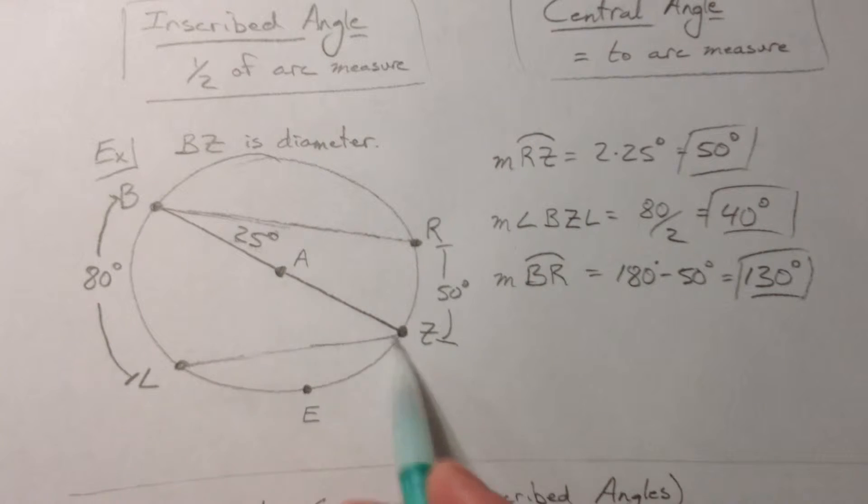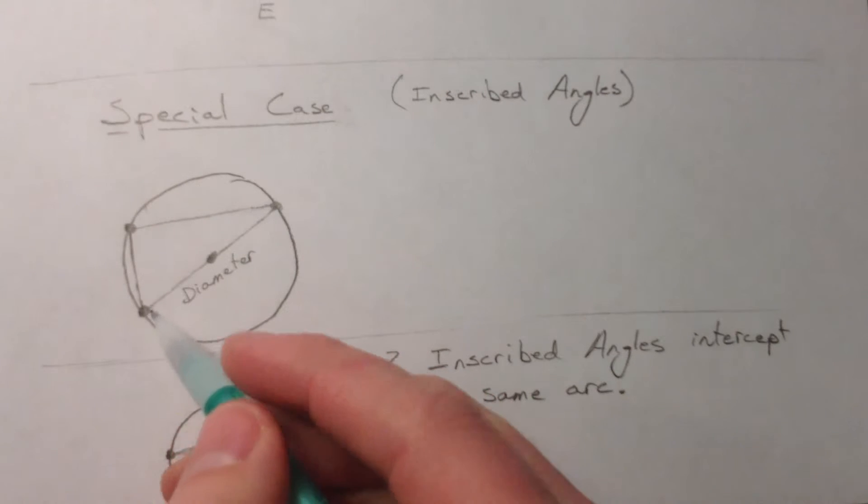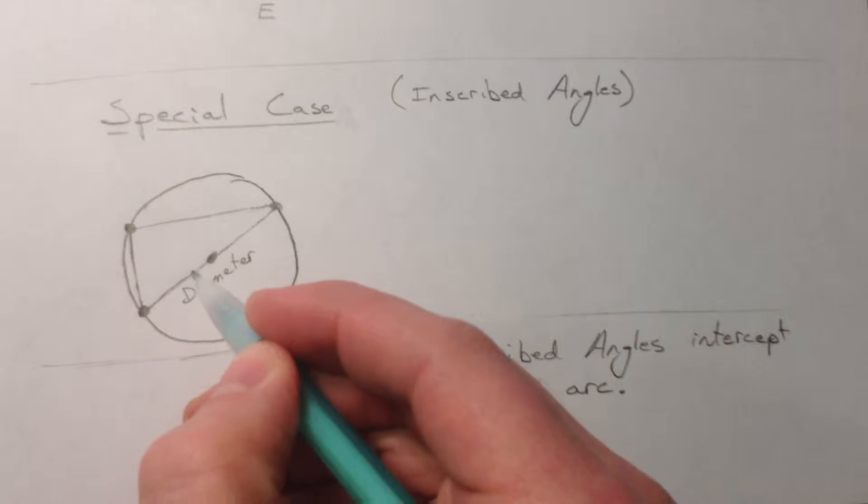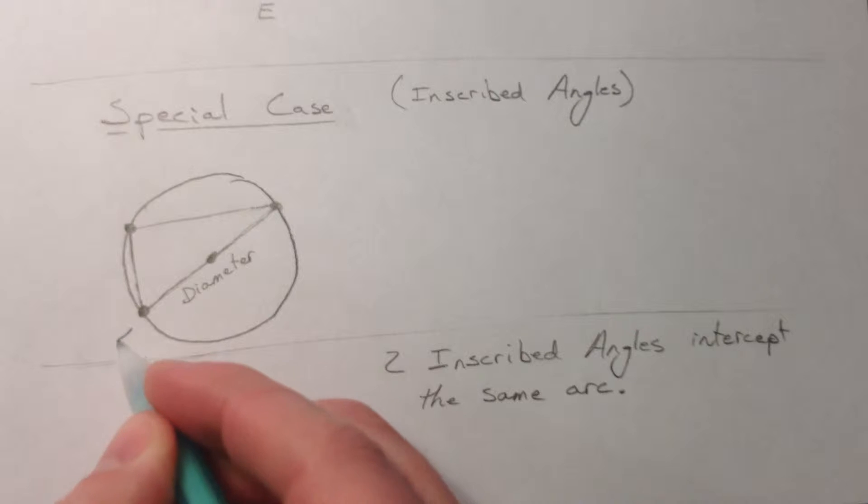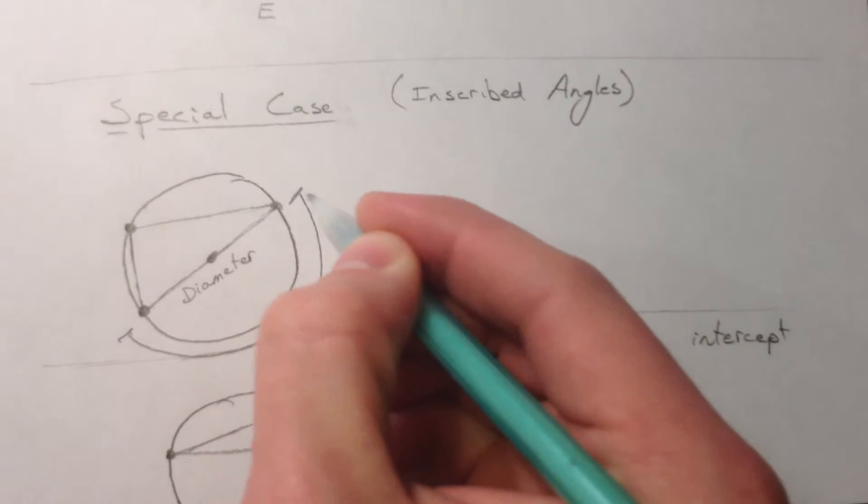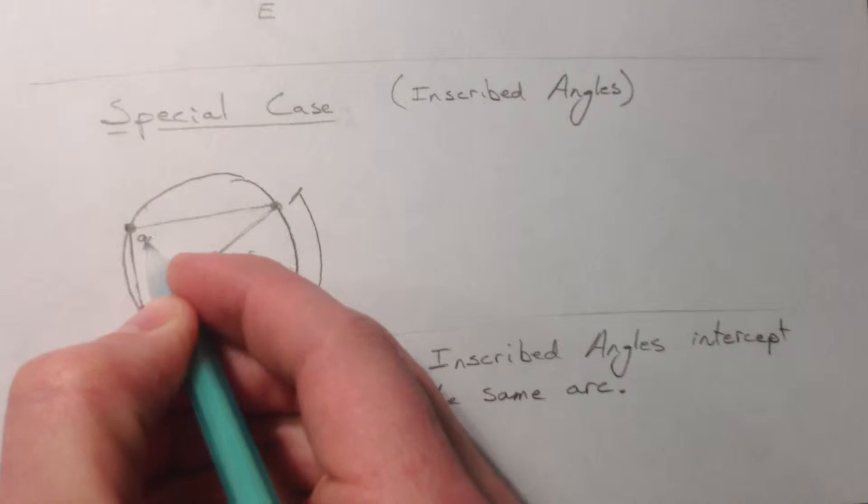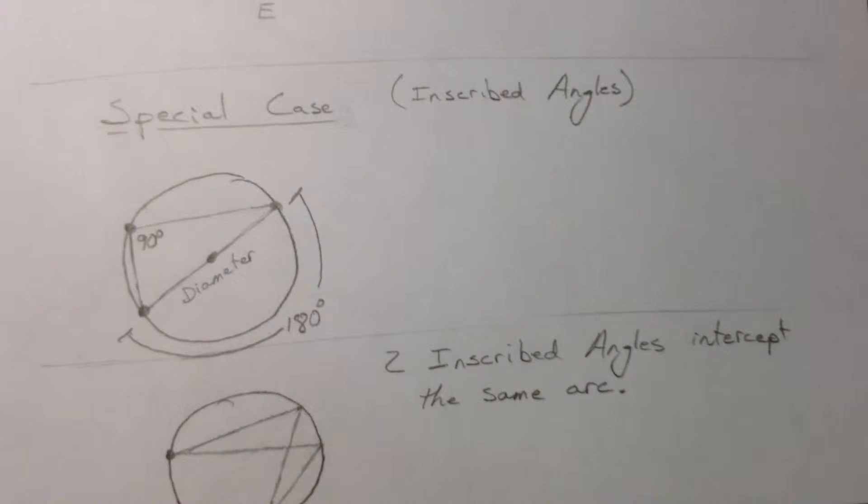Now we have a special case of an inscribed angle. If it's inscribed and it uses the diameter, that means the diameter we just talked about is 180, and if we have 180 and we have an inscribed angle that is exactly half of that, it is 90 degrees. And so this will create perpendicular or right triangles, or however you want to look at it. This is the special case of our half.